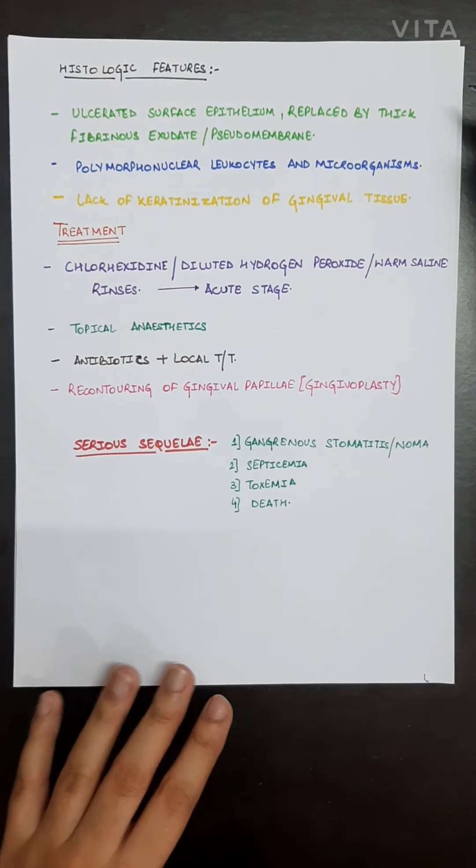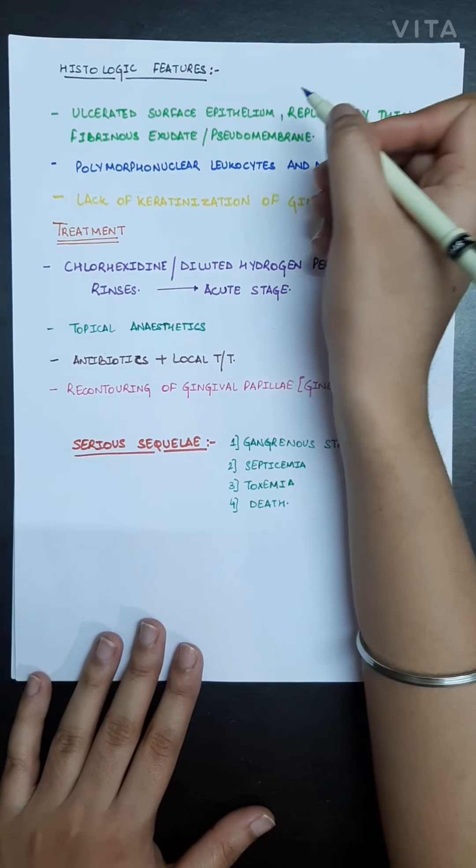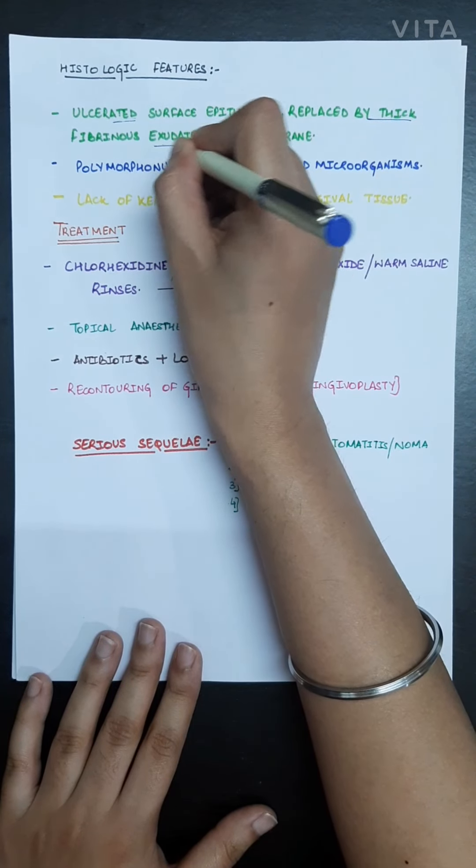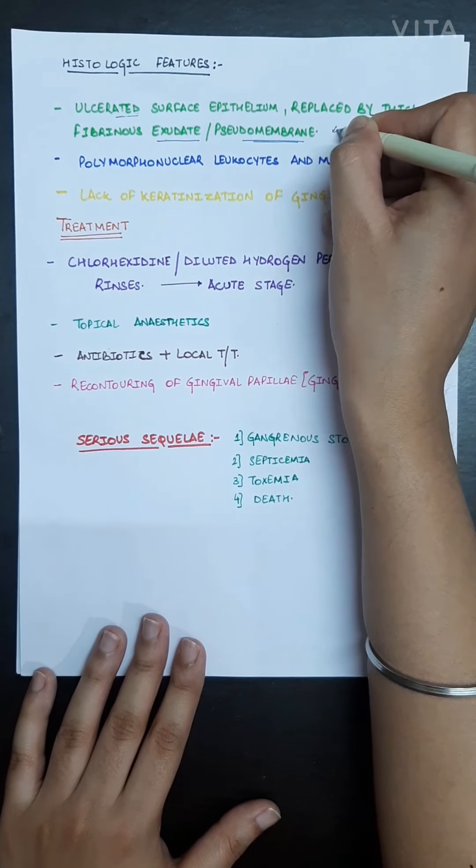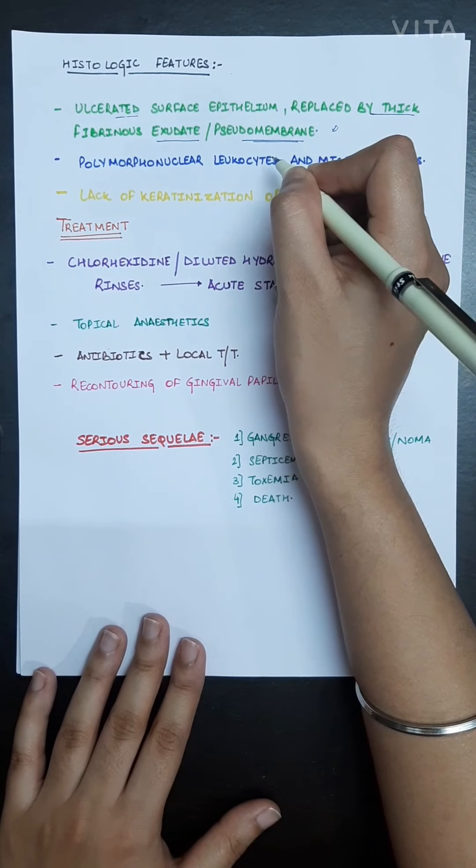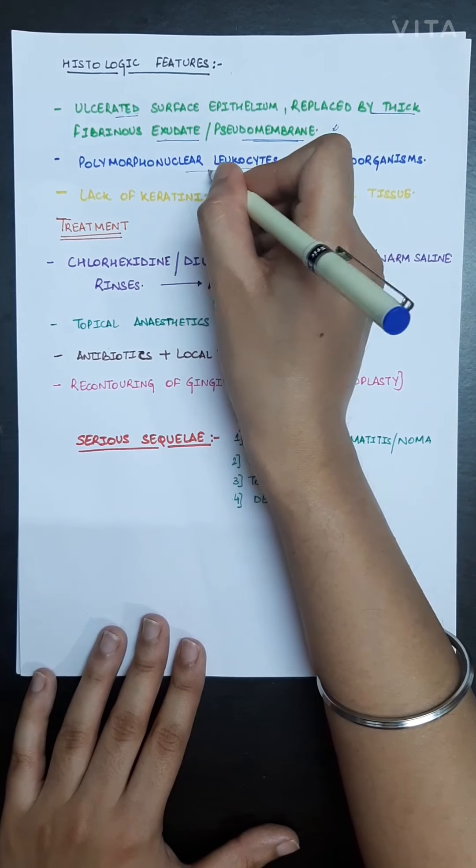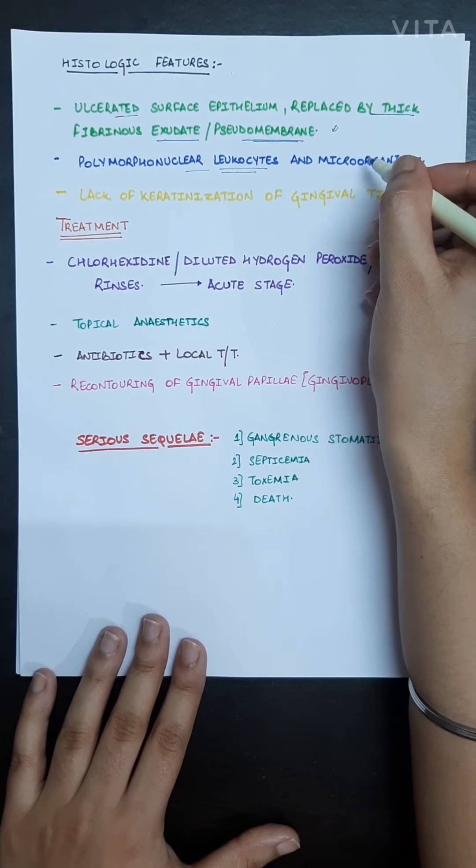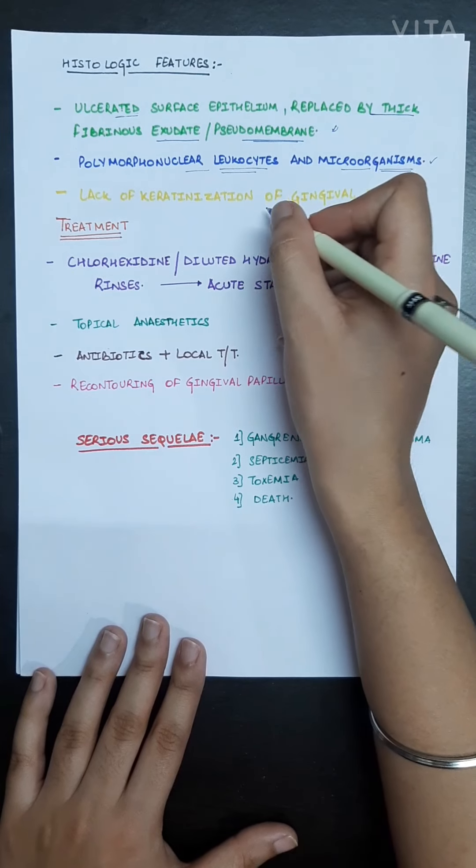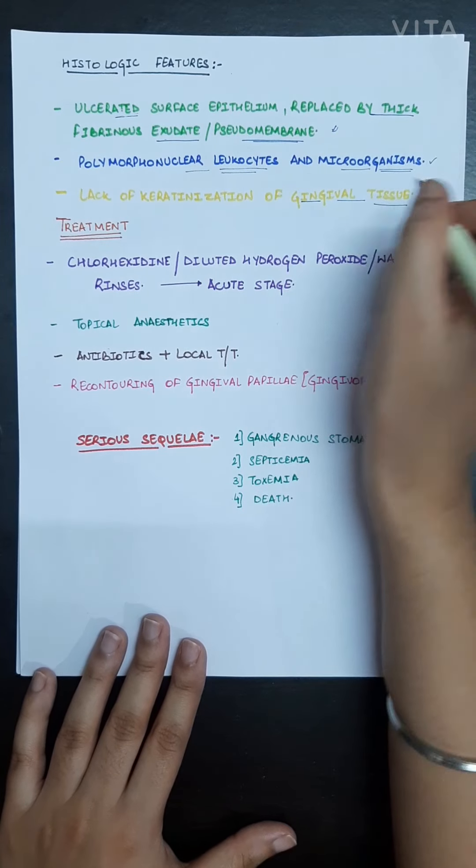Histological features: the gingiva is basically necrosed, so the surface epithelium will be ulcerated and will be replaced by thick fibrinous exudate or pseudomembrane. Polymorphonuclear leukocytes are seen as we know that leukocytosis will occur, and microorganisms will be seen. There is lack of keratinization of the gingiva, so gingival tissues will lack keratinization.